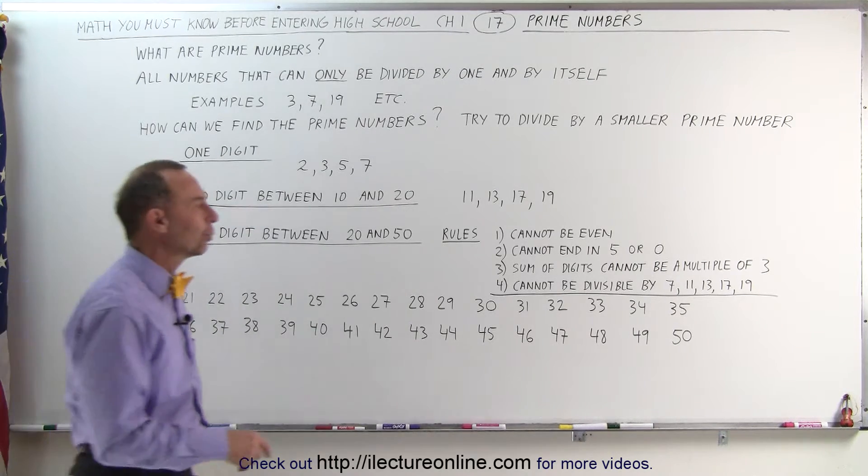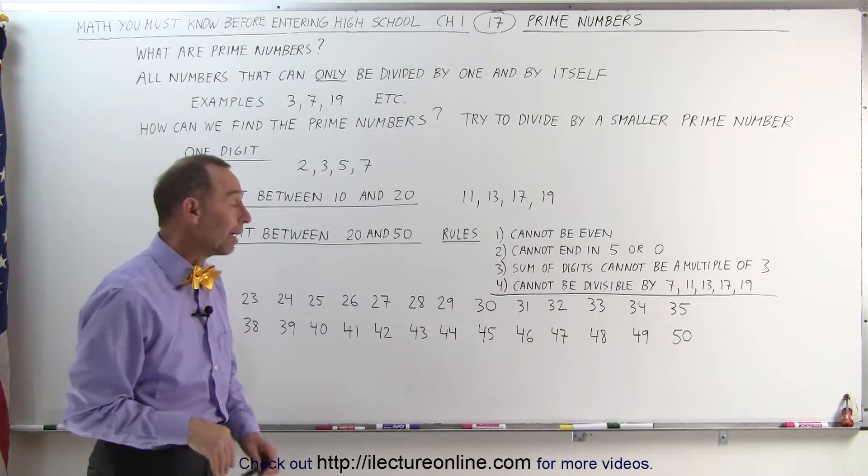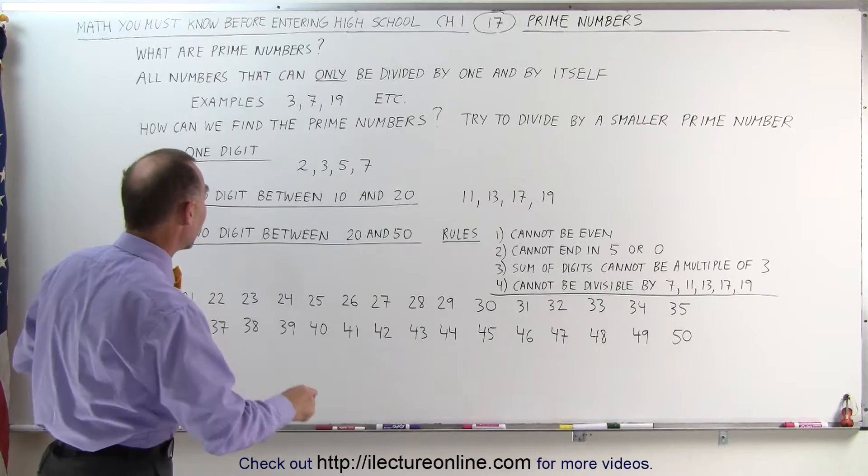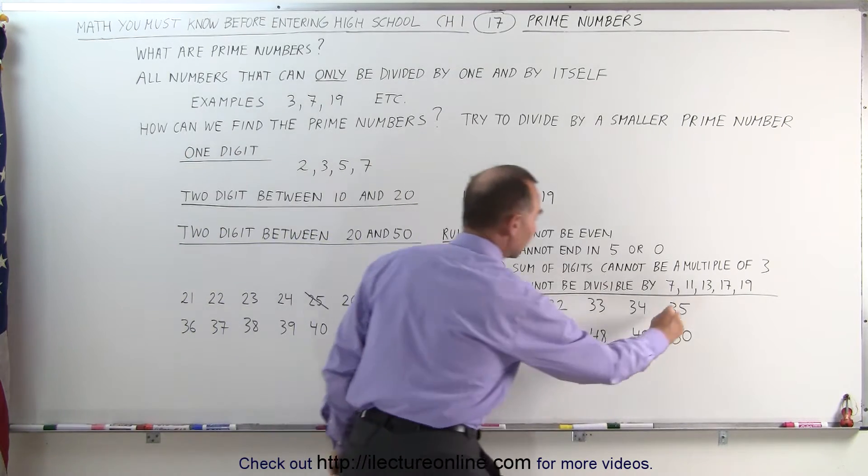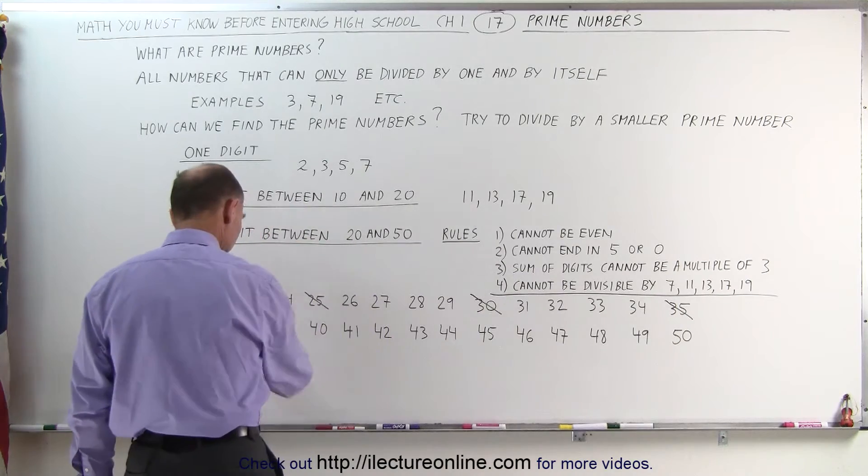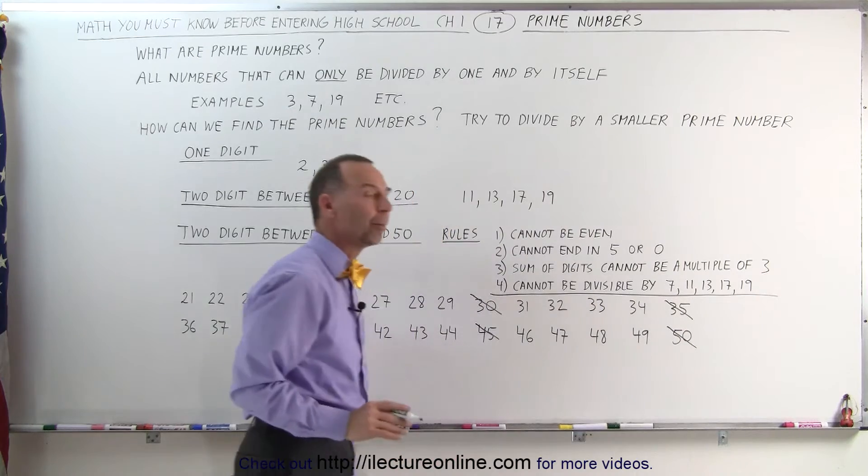First of all, I like the rule, if it ends in a 5 or 0, it cannot be a prime number because then it's divisible by 5. So all the numbers that end in 5 or end in 0 can simply be eliminated. Here we go, 40, 45 and 50. We're sure that those are not prime numbers.